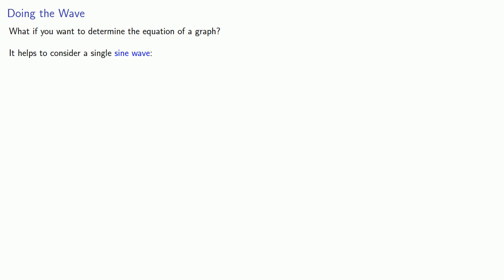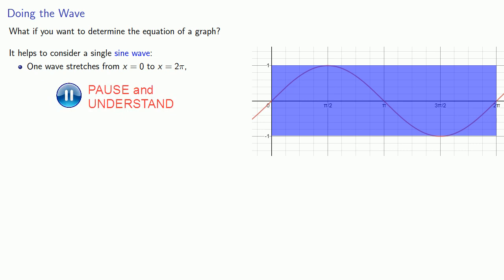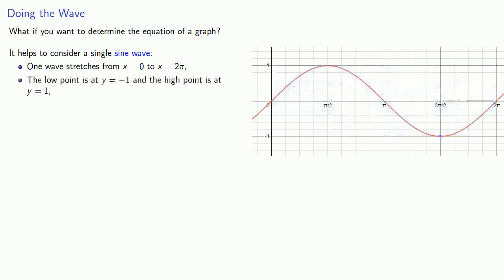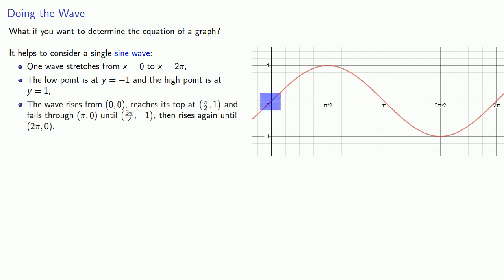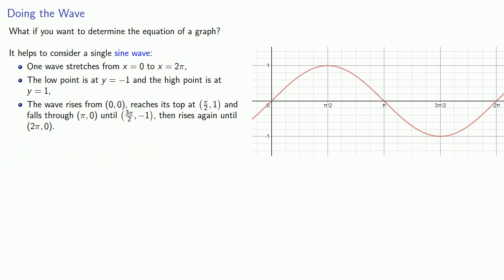To determine the equation of a graph, it helps to consider a single sine wave and its key features. One wave stretches from 0 to 2 pi. The low point is at y equals negative 1, and the high point is at y equals 1. The wave rises from (0, 0), reaches its top at (pi over 2, 1), falls through (pi, 0) until (3 pi over 2, negative 1), then rises again until (2 pi, 0). We'll try to match the features of the given graph to these features of the sine wave.